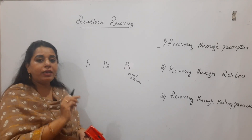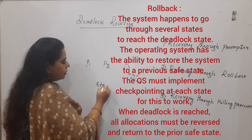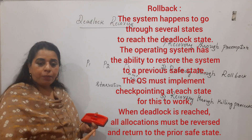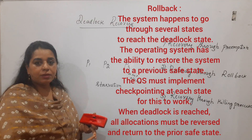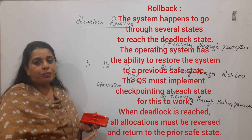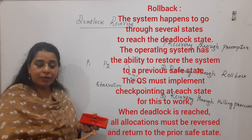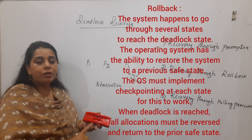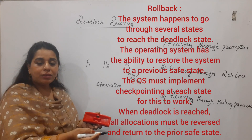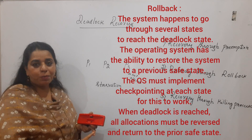You have to be very careful in selecting the processes, and see that processes do not get starved. In this method, you are releasing resources from the processes, and while selecting a process you must check how much percentage of the job that process has completed. Releasing resources when a process is almost about to complete its job is a very costly affair — you are not supposed to do that.